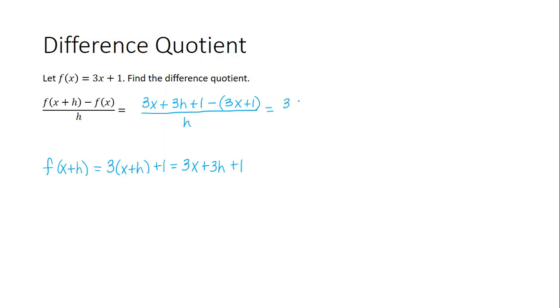Simplifying we get 3x plus 3h plus 1. Now be careful to distribute the negative 1 to each of the terms in parentheses to get minus 3x minus 1 all divided by h.